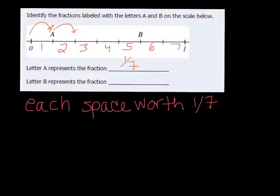And then the one after that would be 2/7, 3/7, 4/7. Then B is 5/7.